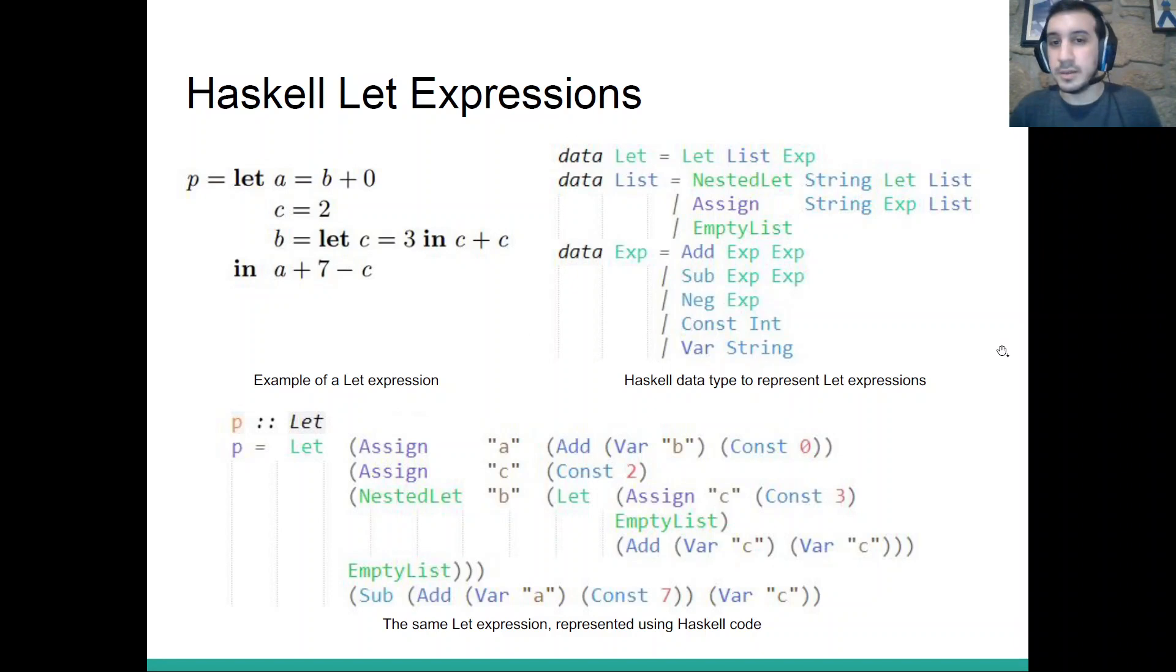Now we can create a Haskell data type to store this kind of expressions. Here we have it. It's a bit complex. We have three different data types, a lot of constructors. Some of them are easy to understand. For example, ConstInt represents a constant integer. Add exp exp would be adding two expressions. But still, it's a lot of data to process. And if we want to represent the same let using our new data types, we get this huge thing, which quickly becomes very complicated to understand and to know how to change intuitively.